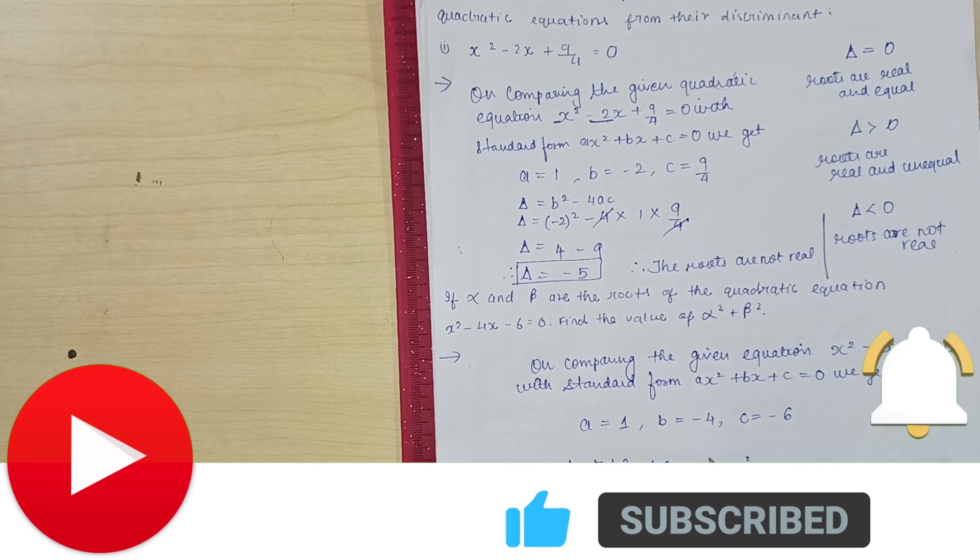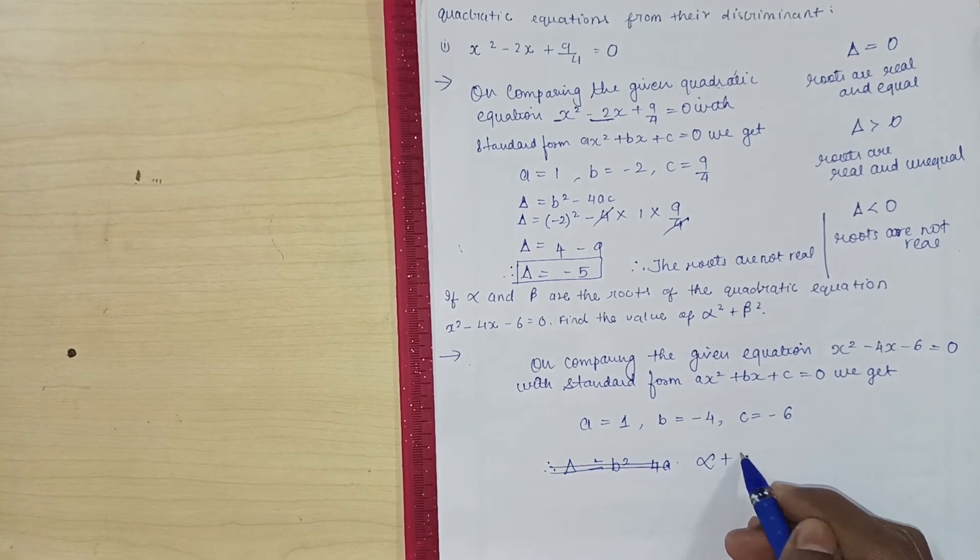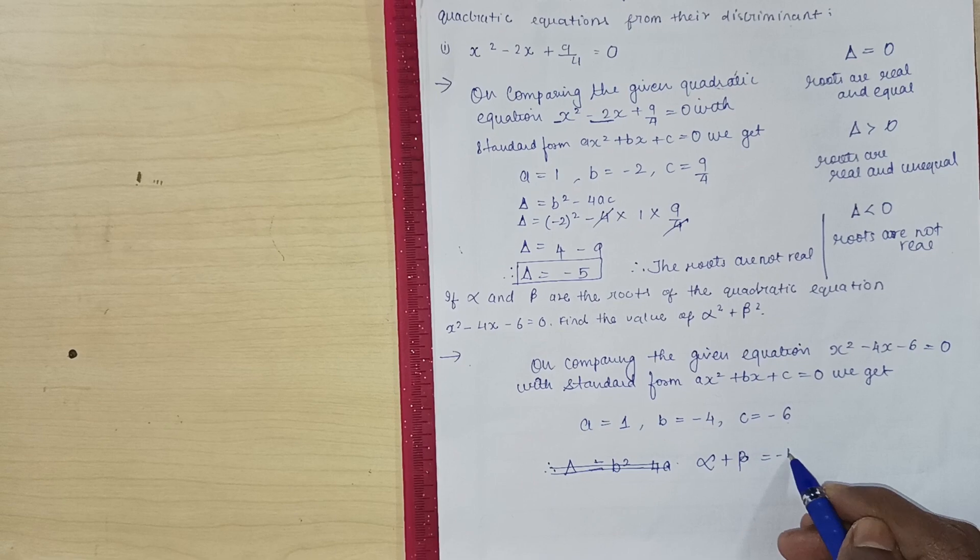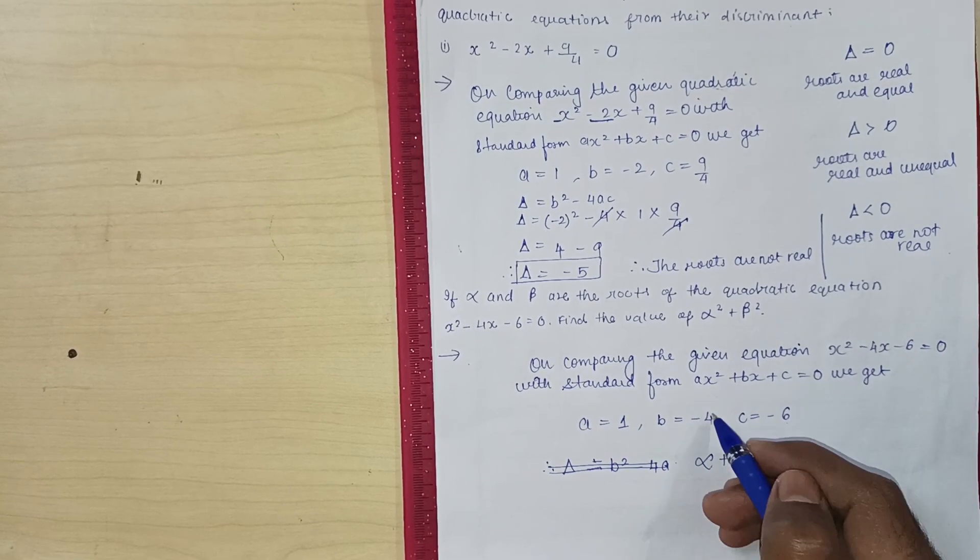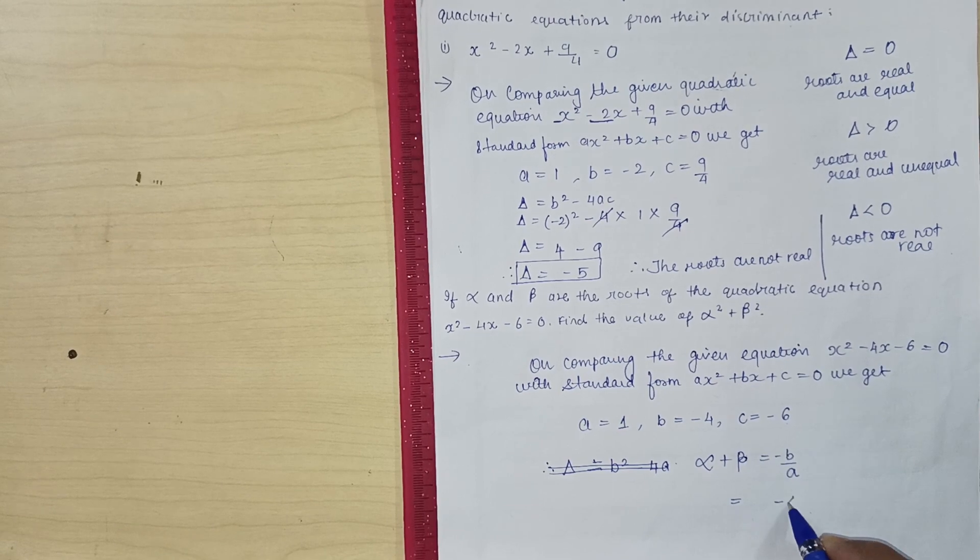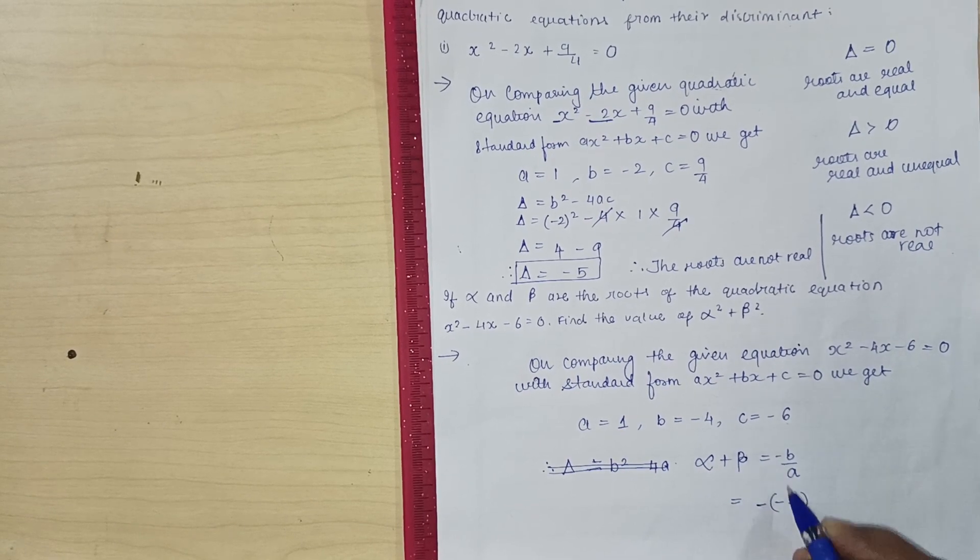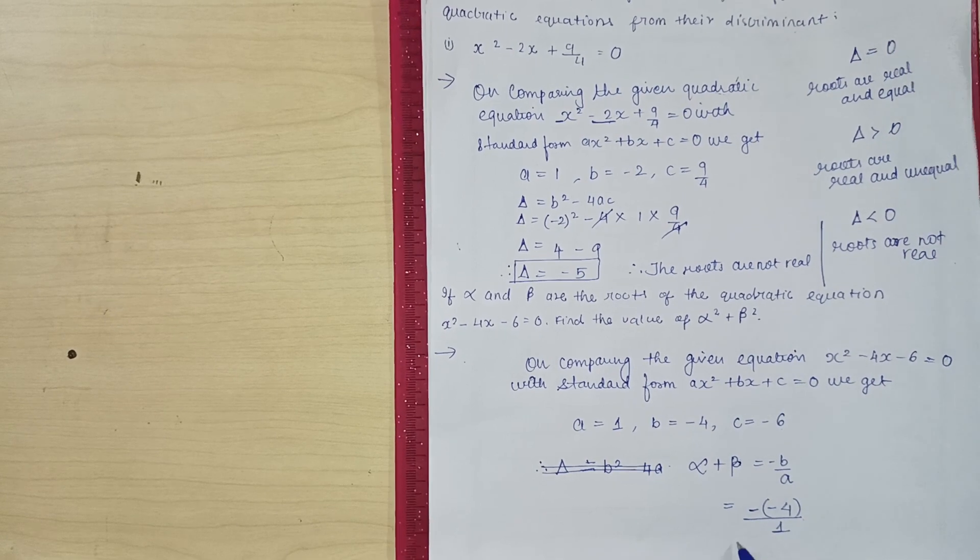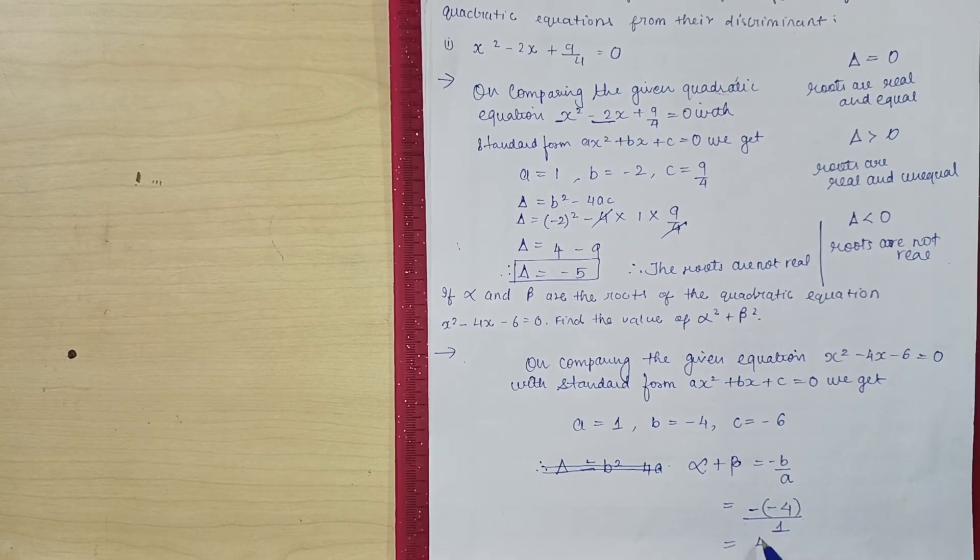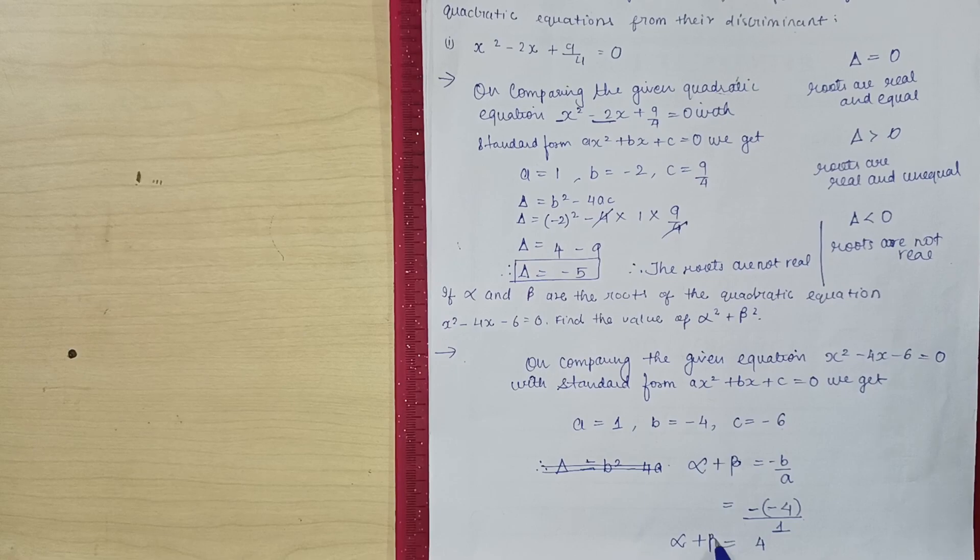Alpha plus beta is how much? Alpha plus beta is how much? Minus b upon a, minus b upon a, yes. And minus b, what is minus b? Minus 4, but one minus will be minus because b also is minus all the points upon a which will become 1. Minus minus will become plus. Alpha plus beta, what do we get? 4.